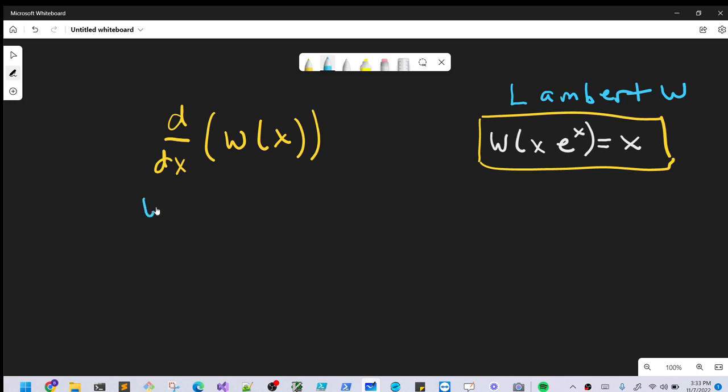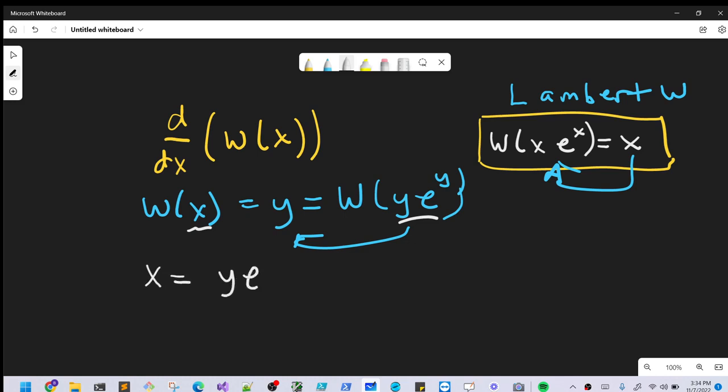So what I'm going to do is set our Lambert W function equal to y, and that's going to allow us to use our formula here on the right. We'll rewrite our y in the form of this Lambert W function like ye^y. Noticing if we were to apply it the other way, we would get back our y. But then from here, we can equate what's inside the Lambert W, so we're going to say that x equals ye^y.